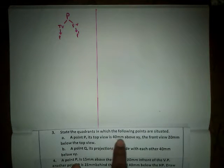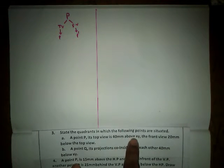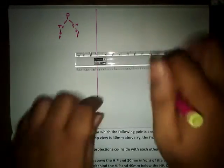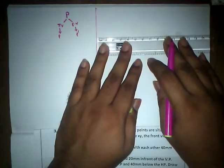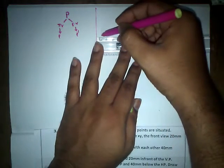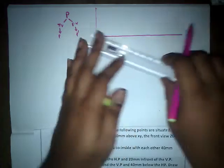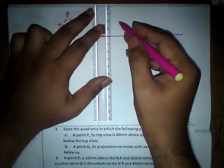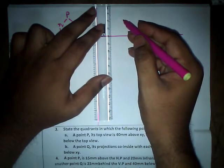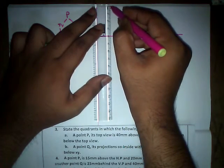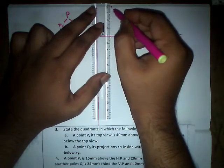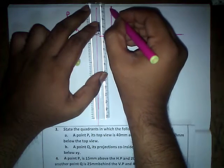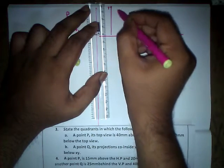According to the question, the top view of point P is 40 mm above the XY reference line. Let us draw the XY reference line and mark the top view — small p — at a distance of 40 mm above it.